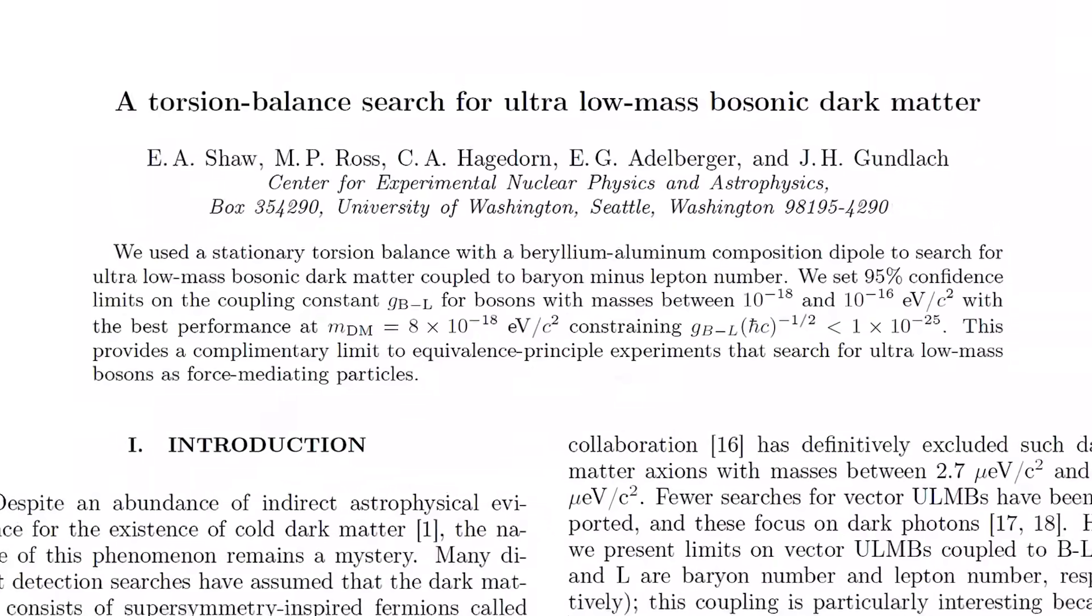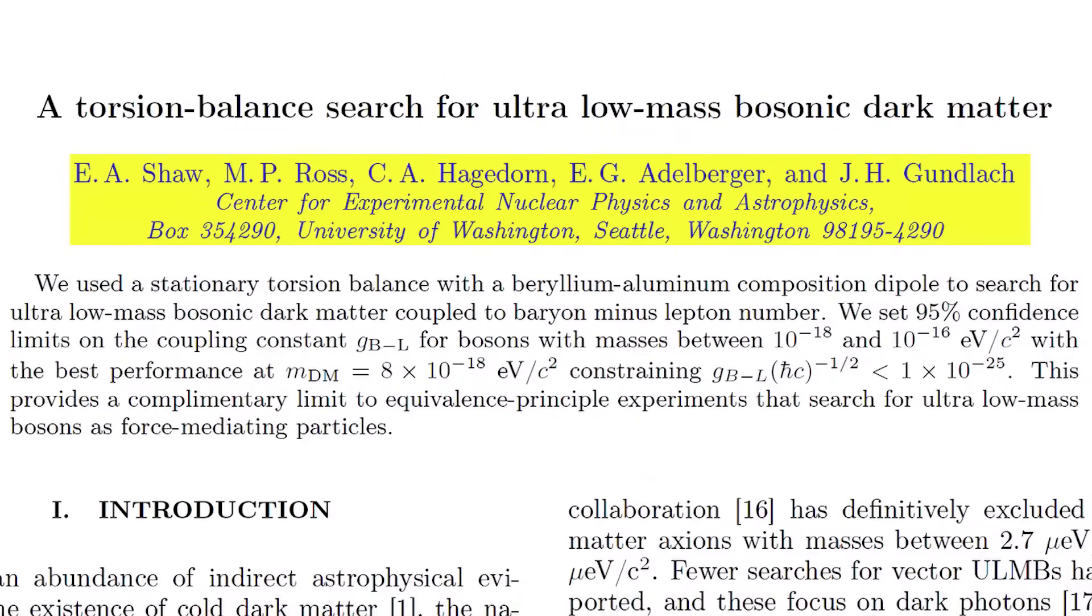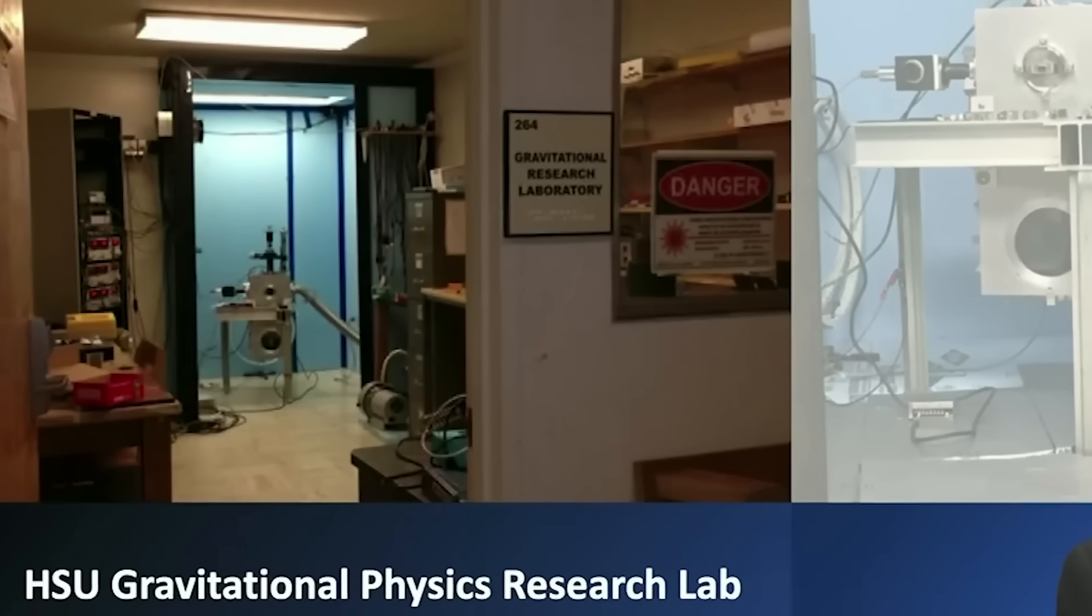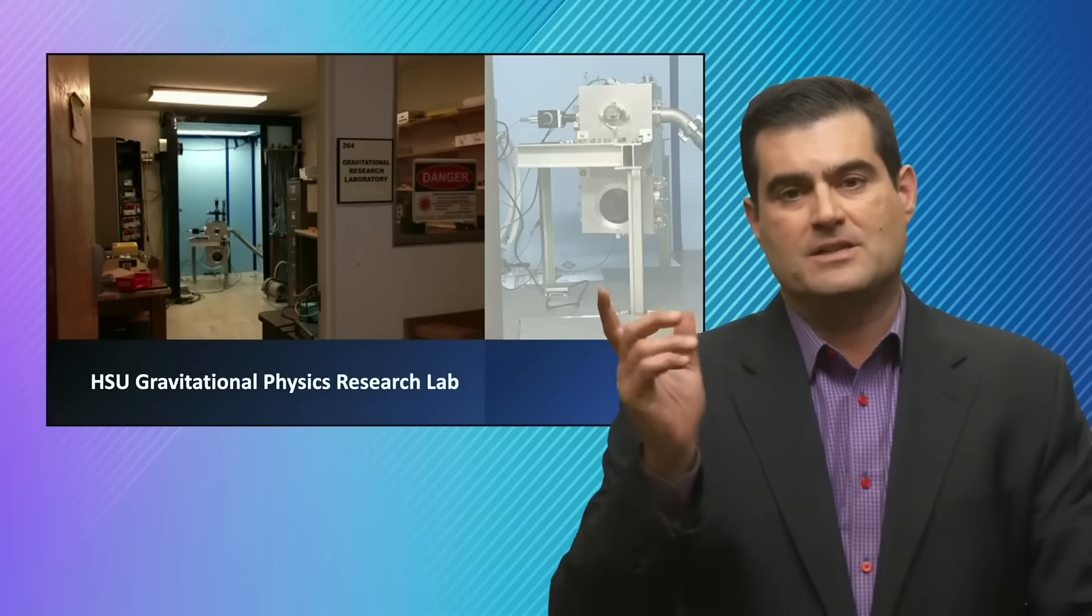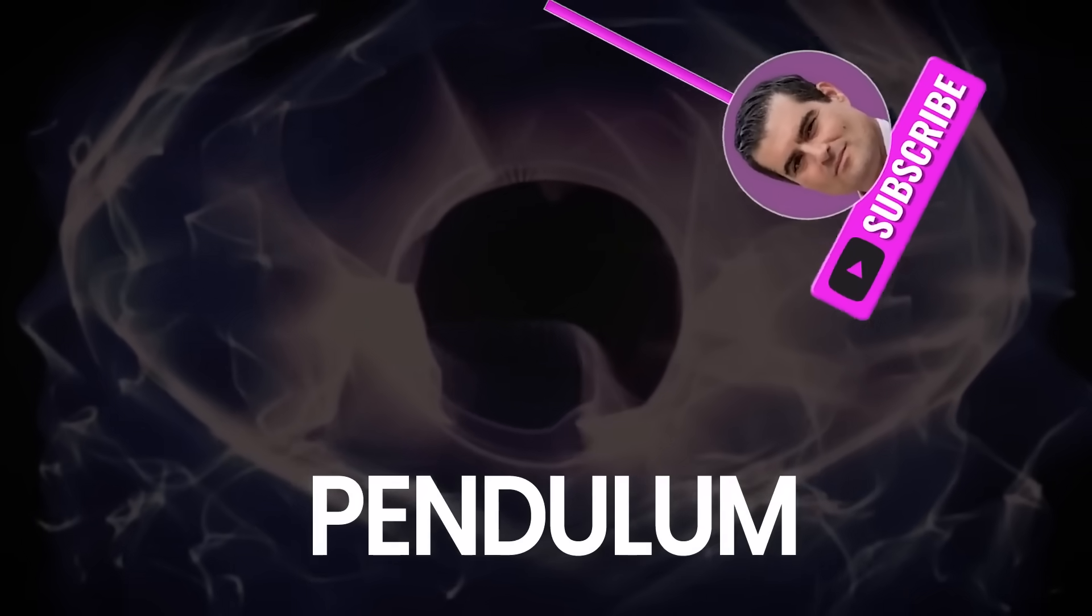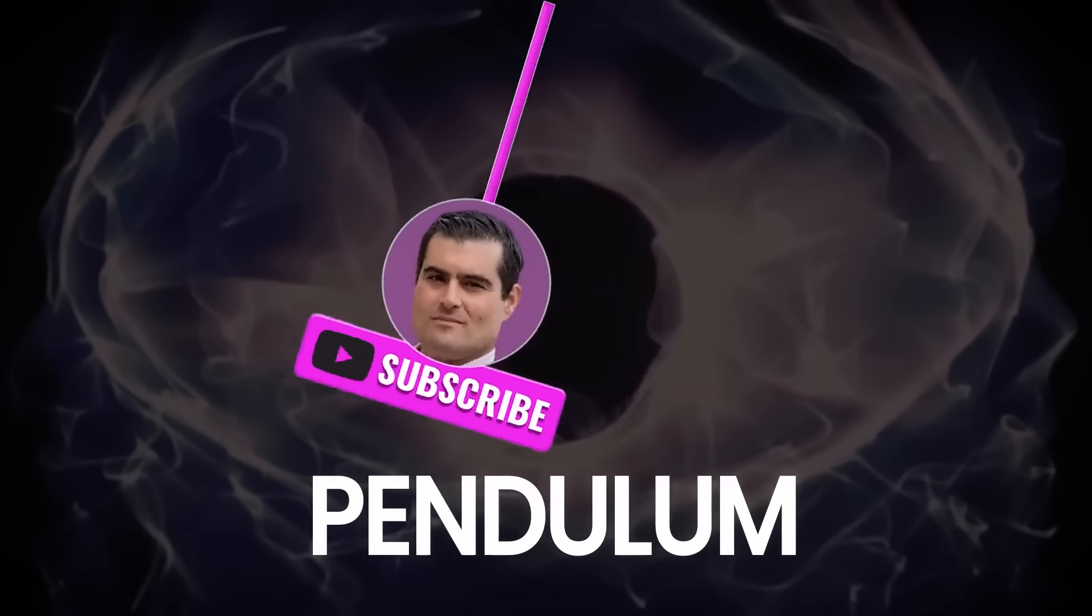At Humboldt State University, the lab that Alissa was working in looked like this. They have a gravitational research lab where they're doing what's called a torsion pendulum. A torsion pendulum is a pendulum that doesn't tick back and forth by swinging like a grandfather clock but instead twists back and forth like a plate on a string.